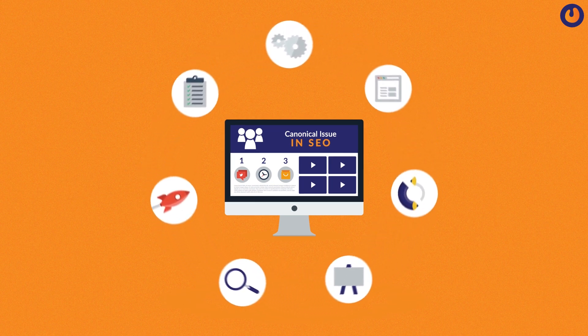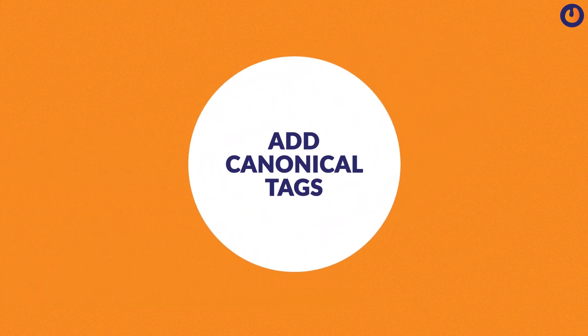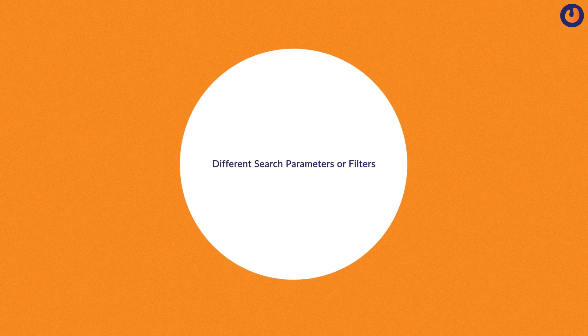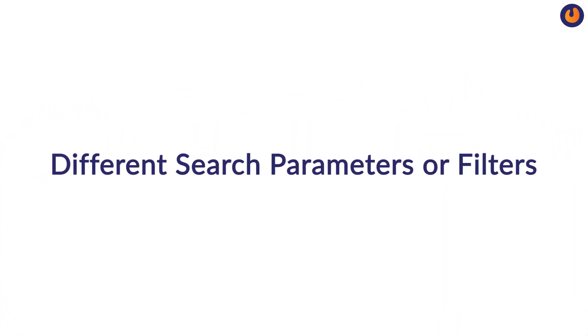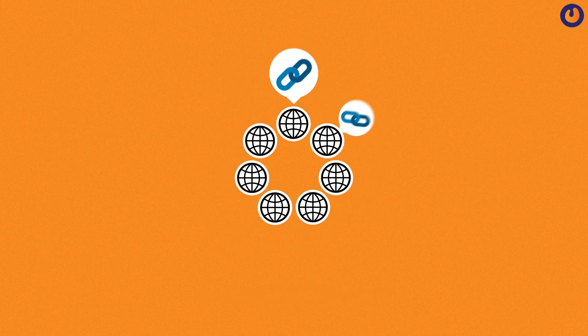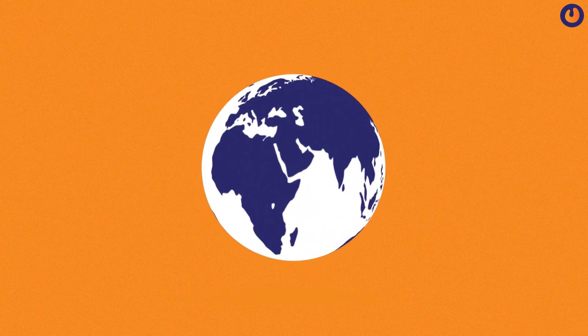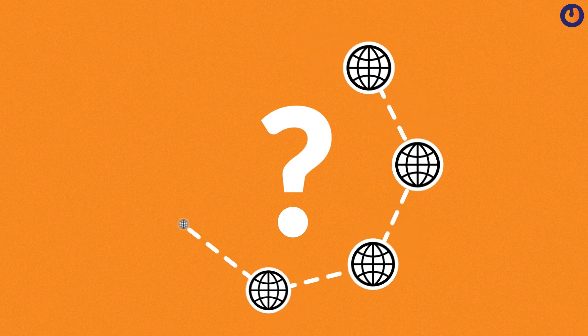Second, another way to fix the canonical issue is to add canonical tags to your web page. URLs that automatically change based on different search parameters or filters should be canonicalized. Through this method, you can simply take charge of prioritizing the web page that you want to canonicalize, instead of letting Google do it for you. All you need to do is add a canonical tag to your website pages. Here is an example of the canonical tag.